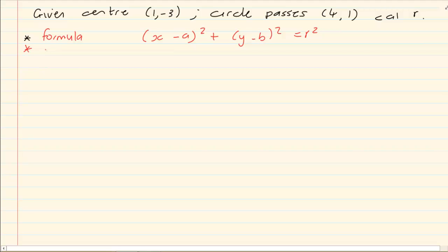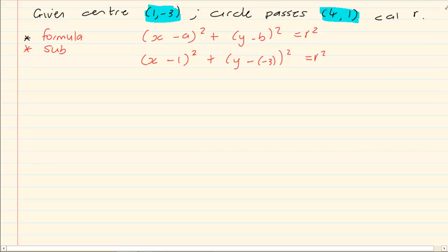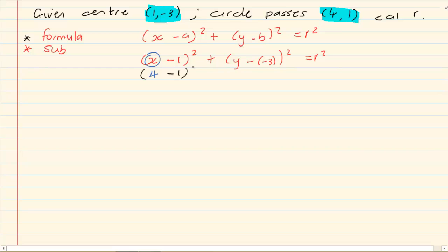Once you have the correct formula, substitute all the information you have. We substitute the center to get (x minus 1) squared plus (y minus minus 3) squared equals r squared. Now we also substitute the other point — putting 4 in for x and 1 in for y. So we have (4 minus 1) squared plus (1 plus 3) squared equals r squared.